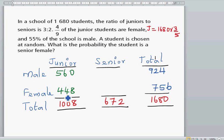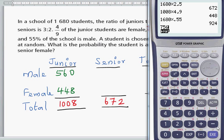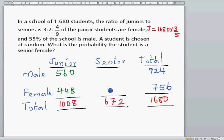Now from this information, you can figure this out. So the female senior, this is the female junior. So the female senior would be 756 minus 448. 756 minus 448 equals 308. So there are 308 females who are seniors.